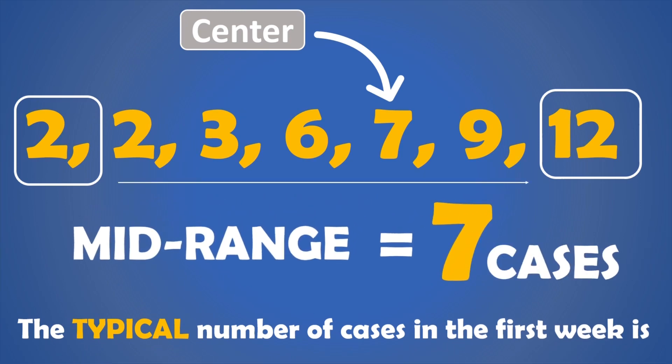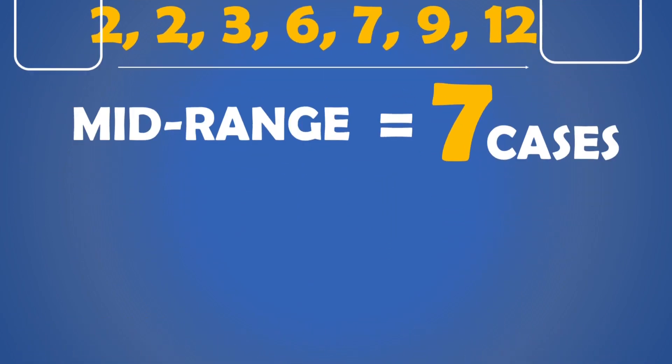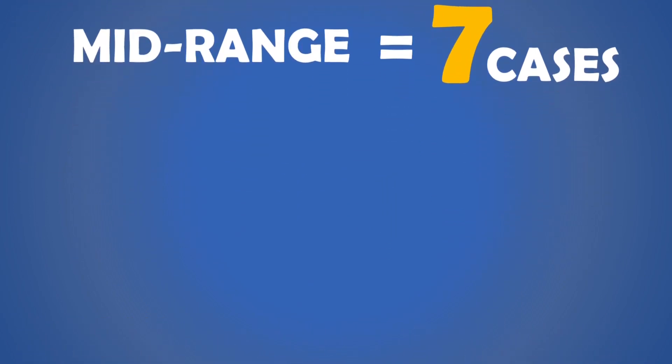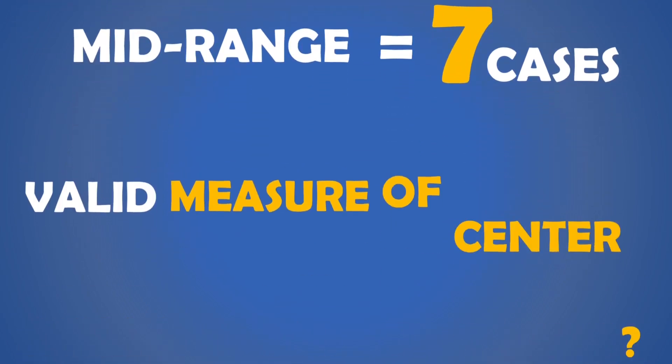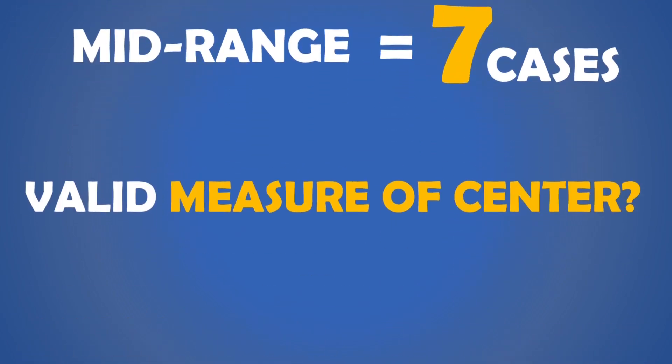Don't forget, this is just a quick estimate of the center or the typical value of the data we have for one week — that's the first week. But how valid is this as a measure of center or as a measure of central tendency?